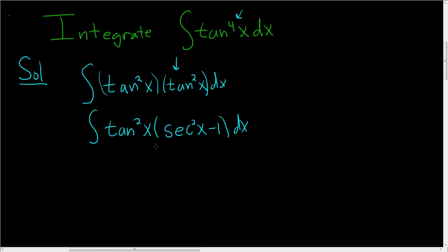At this point, it's still not super clear what to do. So maybe break it up into two integrals. So we'll have tangent squared x secant squared x dx minus tangent squared x dx. And let's keep going.